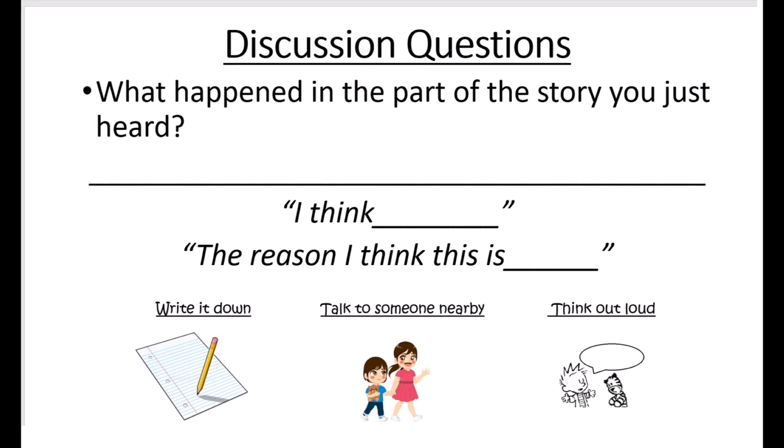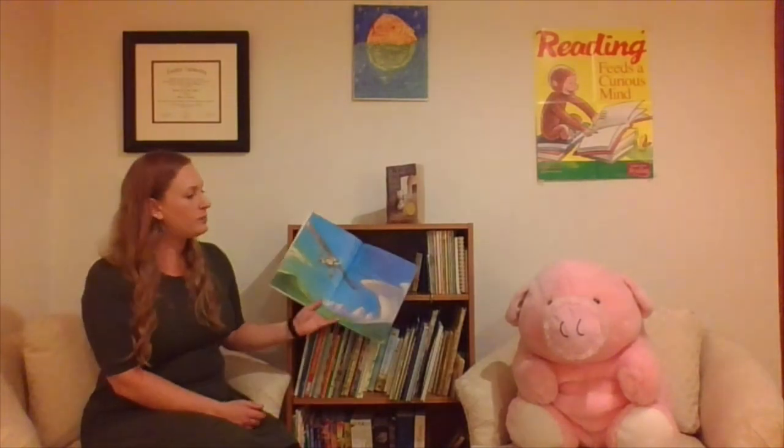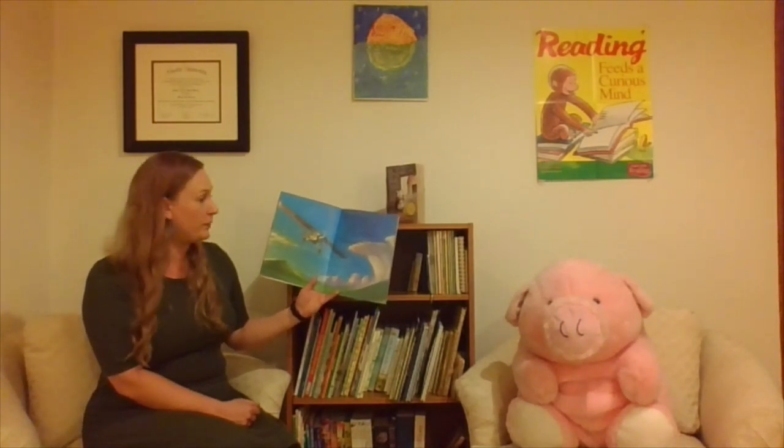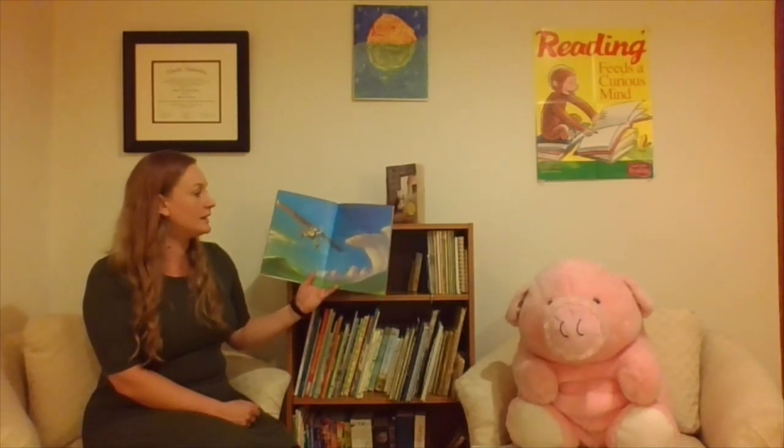So what's happened in the part of the story you just heard? In this part of the story, Lindbergh is trying to find his way now that he can't see the land. He's out on the open ocean and he's worried about what's going to happen at night and whether he'll be able to stay awake.